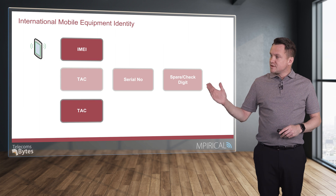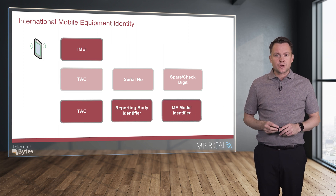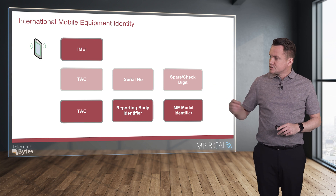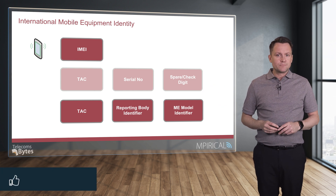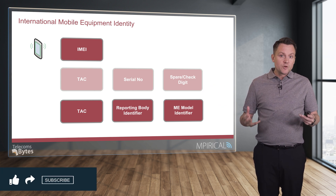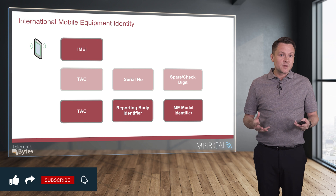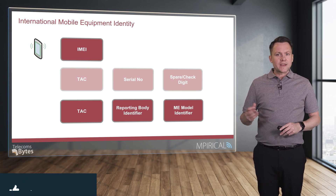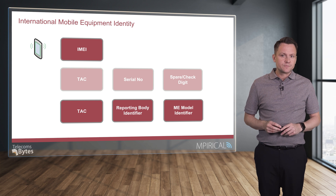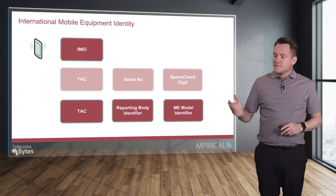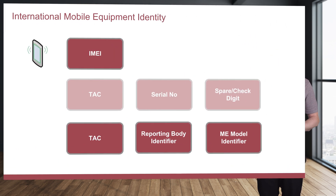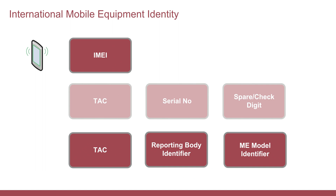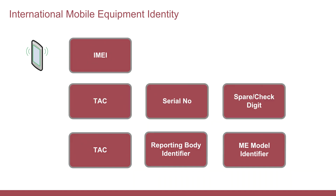The TAC, or type allocation code, consists of two parts. The first two digits are the reporting body identifier — a reporting body being an organization within an area that is responsible for allocating IMEI numbers. The second part is the ME model identifier, which identifies the manufacturer and model of a particular device.